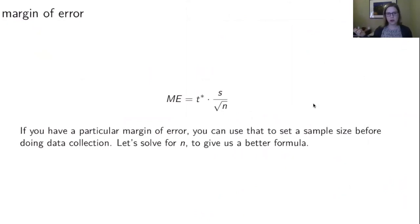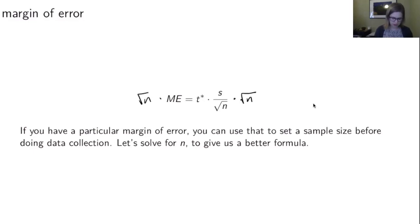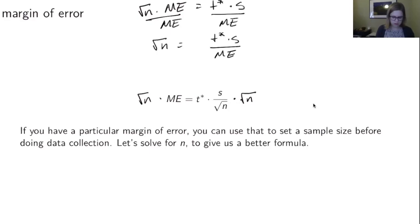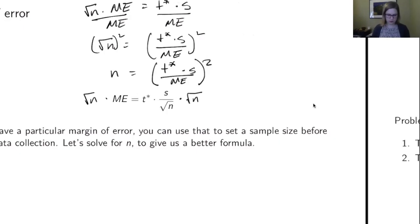Just like when we were doing one proportion, we have a concept of a margin of error — that's the t* value times the standard error. We might want to set a particular margin of error, which would then determine a sample size. We're going to solve for n to get a better formula, starting by multiplying both sides by the square root of n, then dividing by the margin of error, then squaring both sides. So n equals t* times s over the margin of error, all squared.